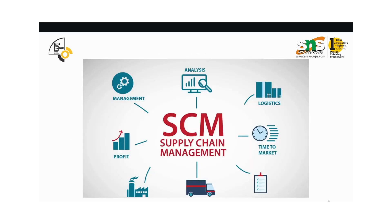This diagram gives you a basic idea of all the processes and activities involved in supply chain. It is all about management, analysis, logistics, inventory, time to market, profit, production, and transportation — supply chain is a combination of all these. In the forthcoming videos, we will have elaborate discussions on all these concepts.